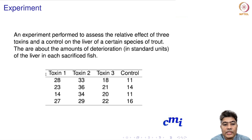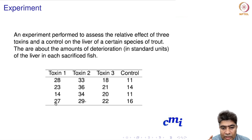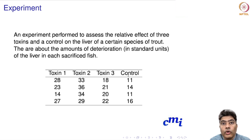There are three toxin levels — Toxin 1, Toxin 2, and Toxin 3 — and a control group where no toxin is given. The level of liver deterioration is being studied. There are four specimens in each group, so there are 16 total observations, across three treatment groups and one control group.